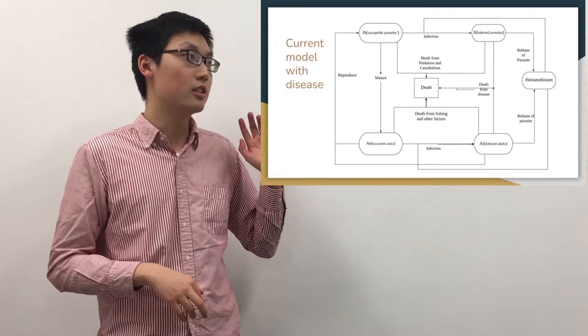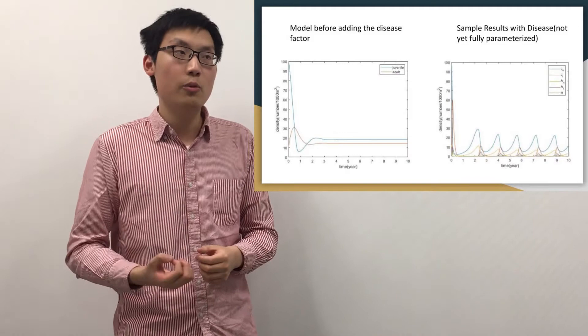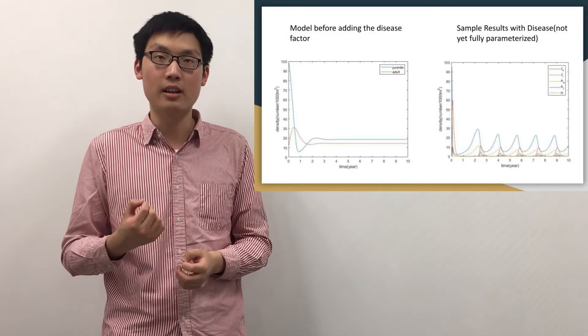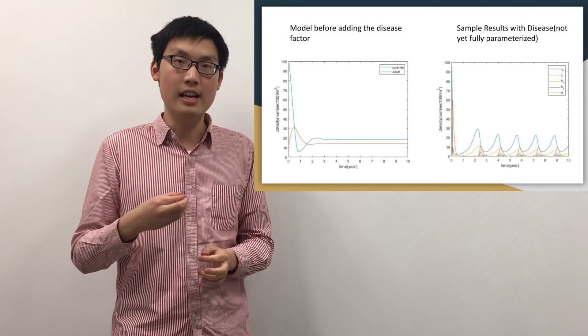Here are some simulation results. The left diagram shows the simulation result of the model without the disease factor, and the right diagram shows the model with the disease factor. We can see that the disease really changes the population significantly. We haven't fully determined all the disease parameters yet, so it may be a little inaccurate, but this represents our current progress. Thank you so much for watching.